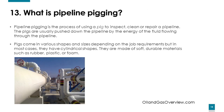What's pipeline pigging? Pipeline pigging is the process of using a pig to inspect, clean, or repair a pipeline. The pigs are usually pushed down the pipeline by the energy of the fluid flowing through it. Pigs come in various shapes and sizes depending on job requirements, but in most cases they have a cylindrical shape and are made of soft, durable materials such as rubber, plastic, or foam.